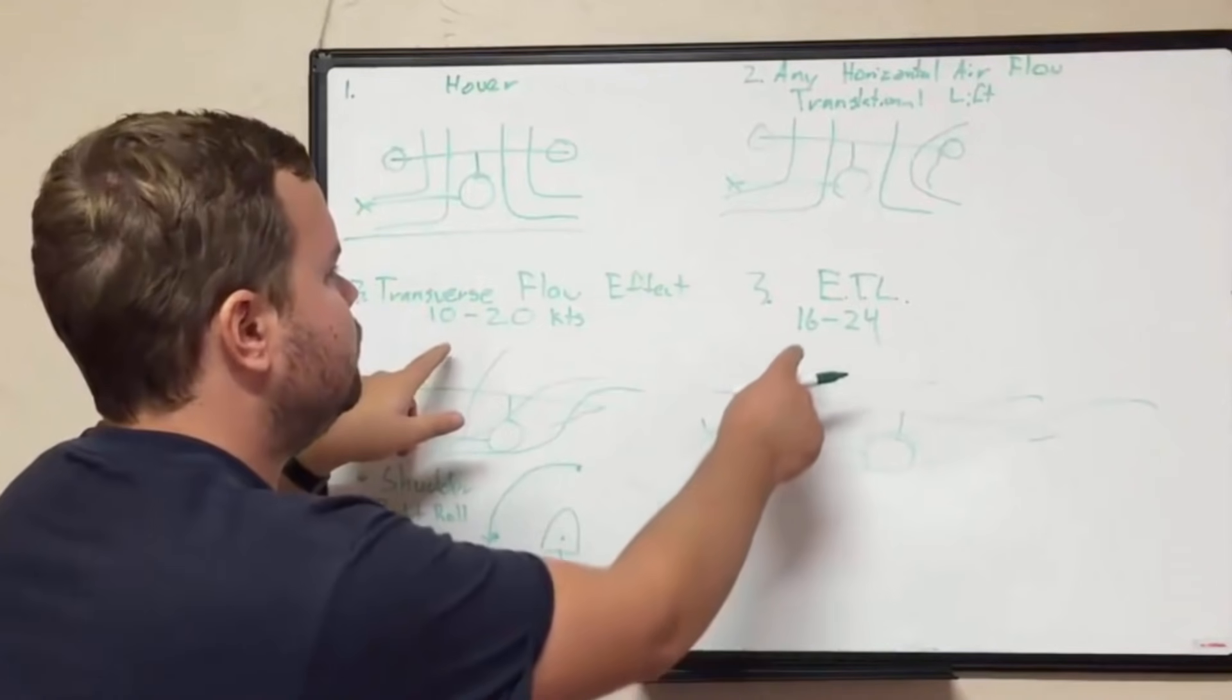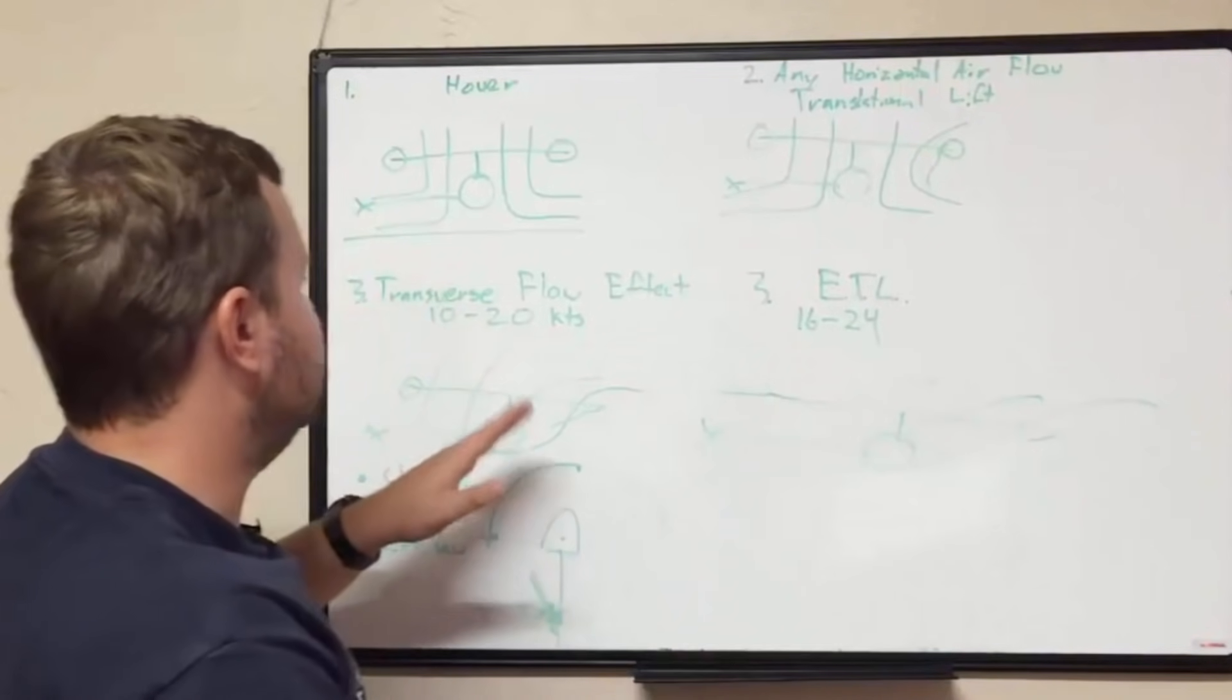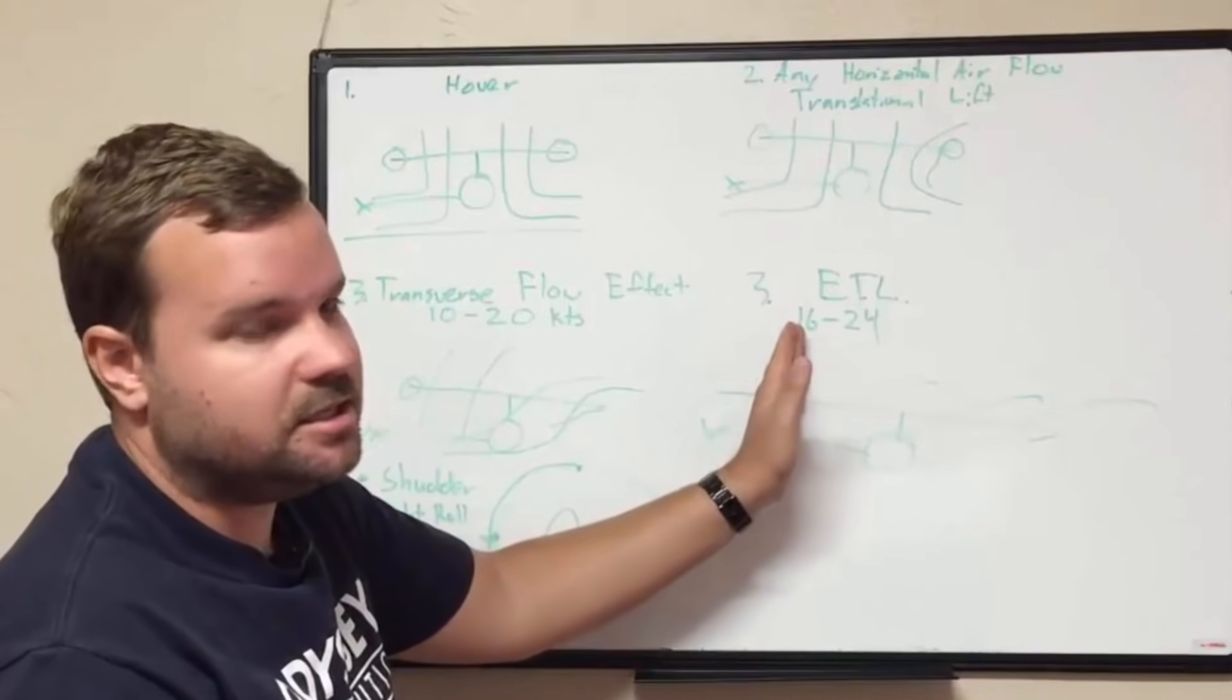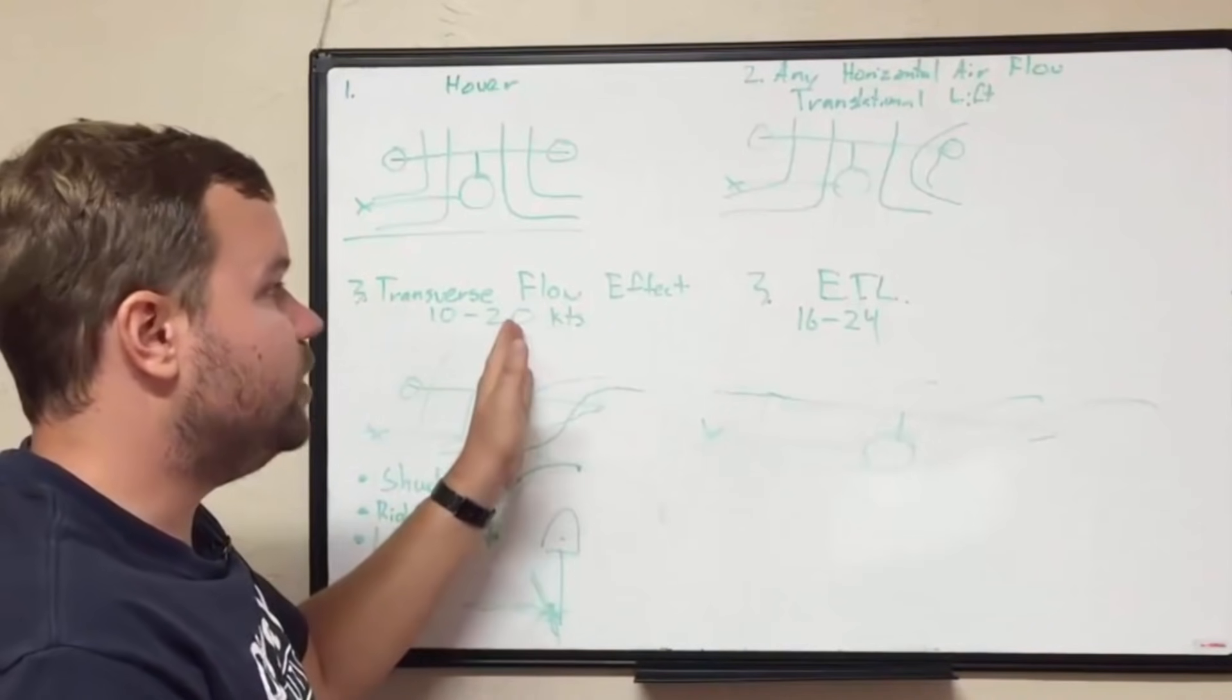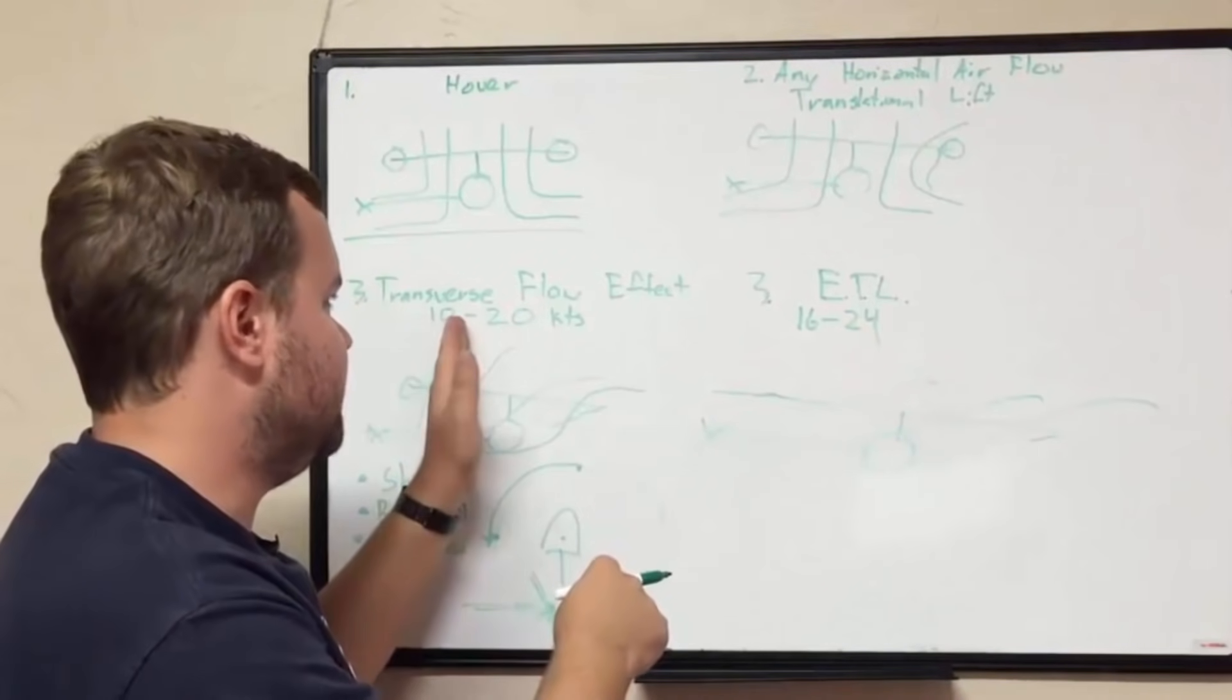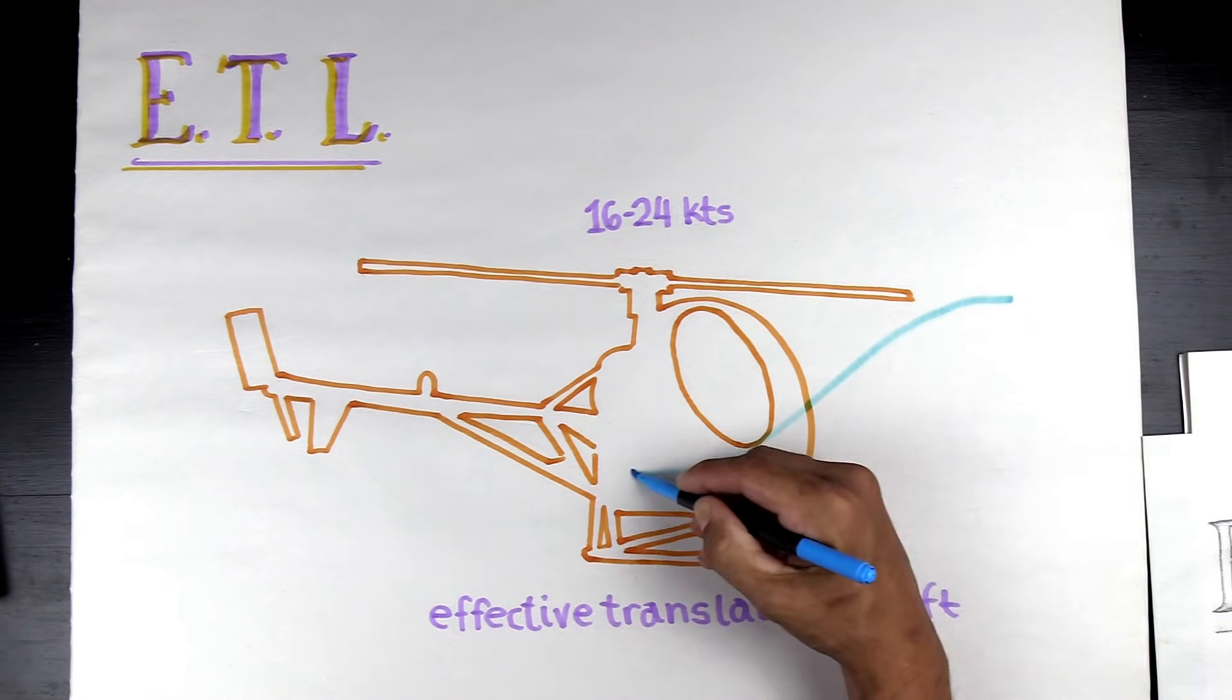Notice these two airspeeds overlap, but these will never overlap. Basically if you hit transverse flow at 10 you're probably going to hit ETL at 16. If you hit transverse flow at 20 you're probably going to hit ETL at 24. You're not going to have both. It's always going to be this then this. And this is why we like to get through the ETL to get into that clean air.